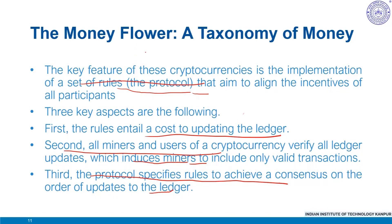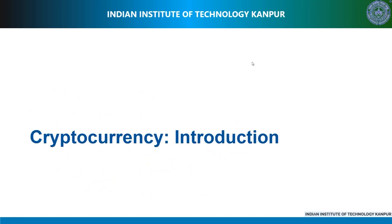This peer-to-peer lending is a decentralized network of nodes. Another important aspect is the distributed ledger, which makes cryptocurrencies a unique new flower in the money flower taxonomy.